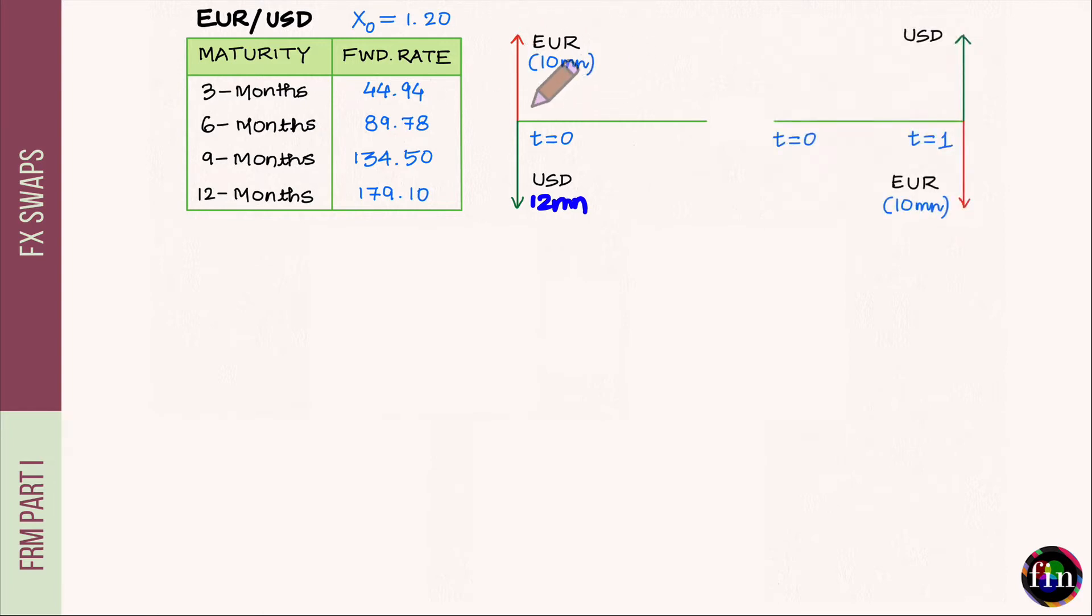The next contract involves exchange of currencies not today, but at some point in the future, one year from today. This time the exchange is opposite: I am selling euros rather than purchasing them, hence a downward pointing arrow. The amount is the same, 10 million euros, and in return I am receiving USD.